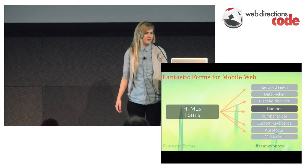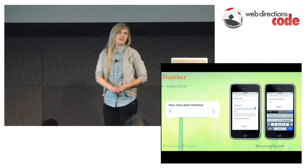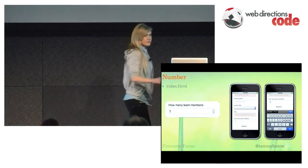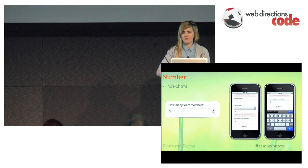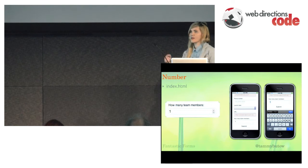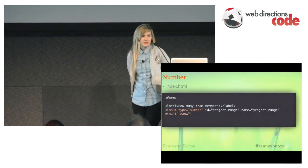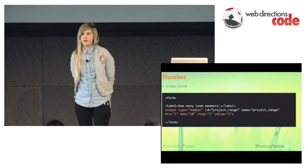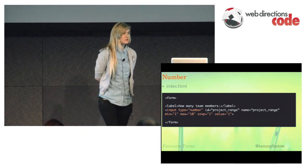The next one is number. For this I've got 'how many team members might you have.' On the web version you'll have the little number spinner. On the mobile version it'll let you input whatever number, but it does change the actual keyboard — it gives you a number custom keyboard that allows you to input numbers more easily. That's just by saying input type equals number. And then you can also set the range: the min value, the max value, and what you'd like it displayed as when they first load it.